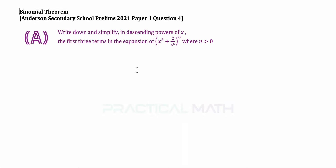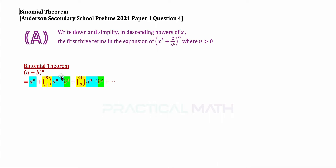For part A, we are told to write down and simplify the first three terms of this expansion. The power is n, which is unknown. Let us recap on the binomial theorem: expanding (a + b) to the power of n, the first term is a to the power of n, plus nc1 times a to the power of n minus 1 times b, plus nc2 times a to the power of n minus 2 times b squared, plus further terms.